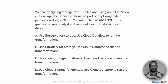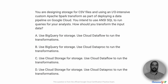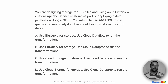In this project scenario, you're designing storage for CSV files and using an IO-intensive custom Apache Spark transform as part of deploying a data pipeline on Google Cloud. You intend to use ANSI SQL to run queries for analysts. How should you transform the input data?